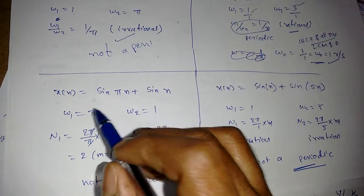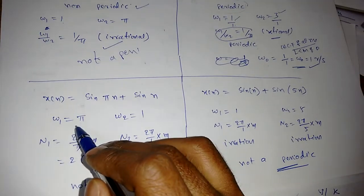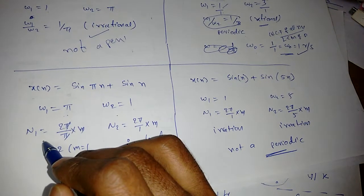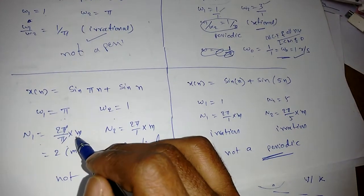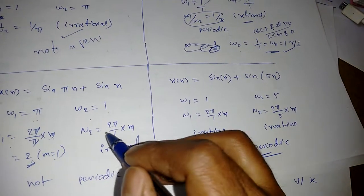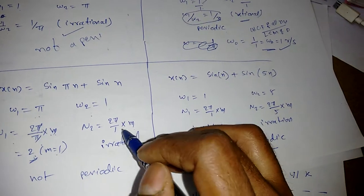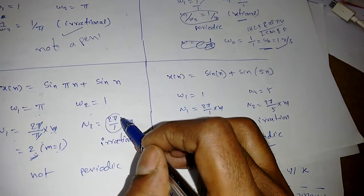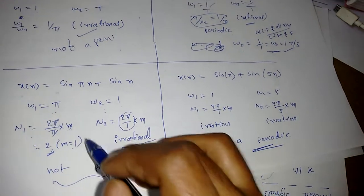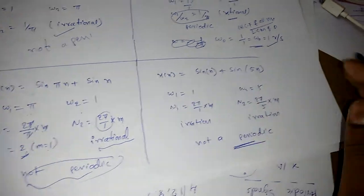If it is a discrete time signal, suppose sin pi n and sin n are given. From this omega 1 is equal to pi, omega 2 is equal to 1. First we need to find n1: n1 is 2 pi by pi into m, so m equals 1, which is a rational number. Suppose n2 is equal to 2 pi by omega 2. Omega 2 is 1. There is no integer to make this a rational number, so it is not periodic. Periodic plus not periodic will become a not periodic signal.